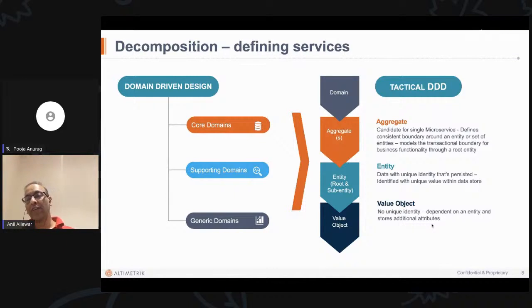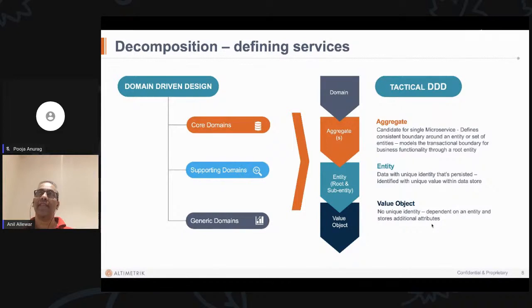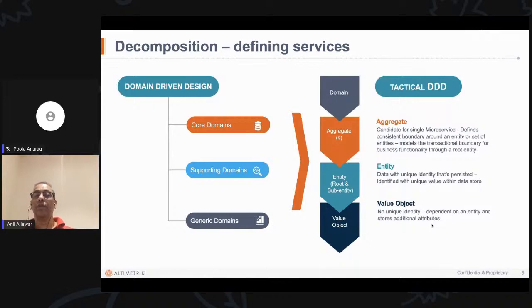We start defining an entity, which is data that has to be persistent with a unique identity. So something like, in the case of a food delivery service, a restaurant could be a unique identity. A user's orders could be a unique identity that has to be persistent. So that becomes an entity.